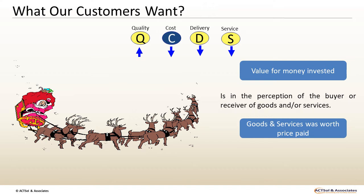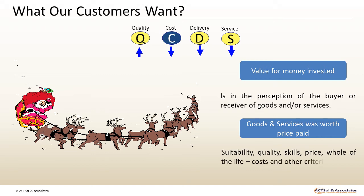Examples of types of factors that may be considered are Suitability, Quality, Skills, Price, Whole-of-life costs, and other criteria. The mix of these and other factors, and the relevant importance of each, will vary on a case-to-case basis.